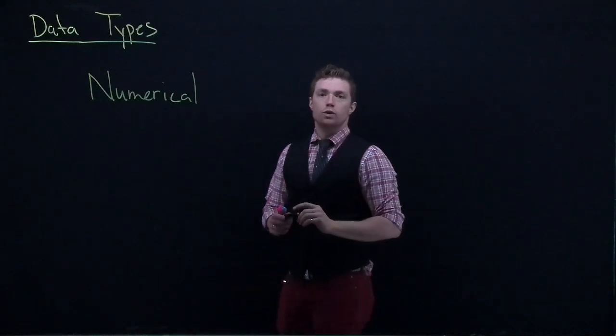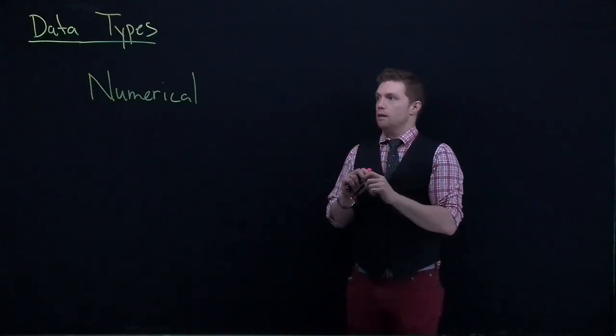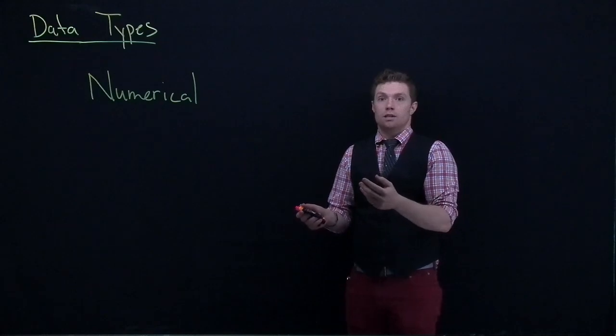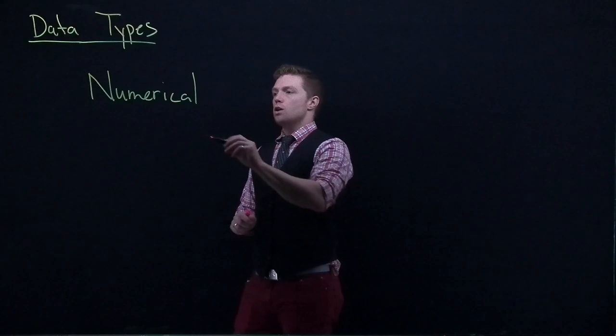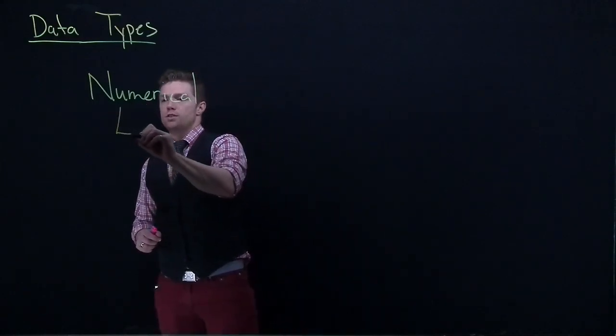The first one that we're going to talk about is numerical. Numerical data is really easy to identify because, just like the name suggests, it's going to be reported as numbers. But numerical has two subsets of data to it.